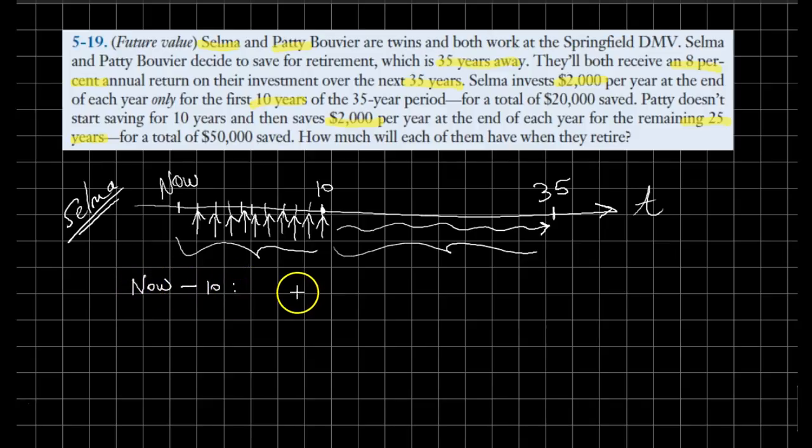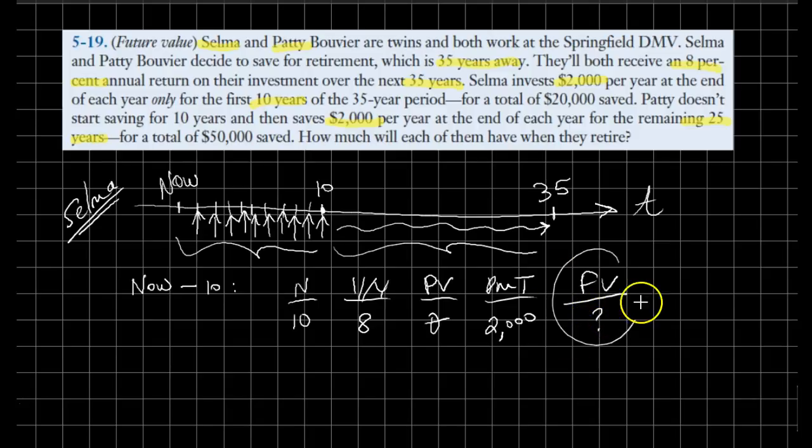Between now and year 10, we use our financial calculator. We invest for 10 years, we can earn 8% throughout our investment horizon. We do not initially deposit any amount, however at the end of each year during our first 10 years we deposit $2,000, and we wonder how much our money will grow into at the end of the 10th year.